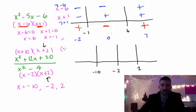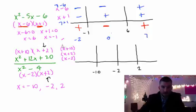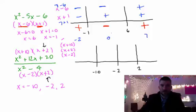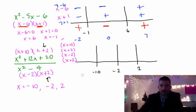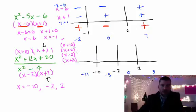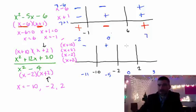Label all the factors on the left: (x plus 10), (x plus 2), (x minus 2), and the other (x plus 2) — list everything because they all multiply together to give the sign we're looking for. Now pick test values: negative 11 for the region less than negative 10, negative 5 between negative 10 and negative 2, 0 between negative 2 and 2, and 3 for greater than 2. Plugging negative 11 into (x plus 10) gives negative; negative 5 gives positive; 0 gives positive; 3 gives positive.